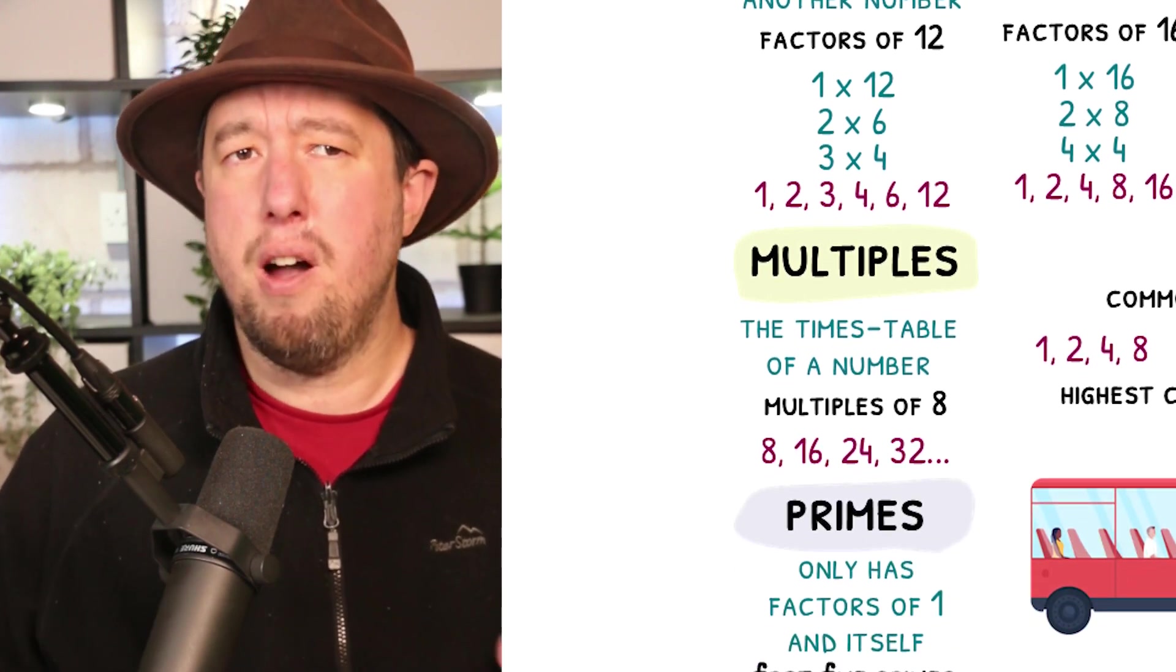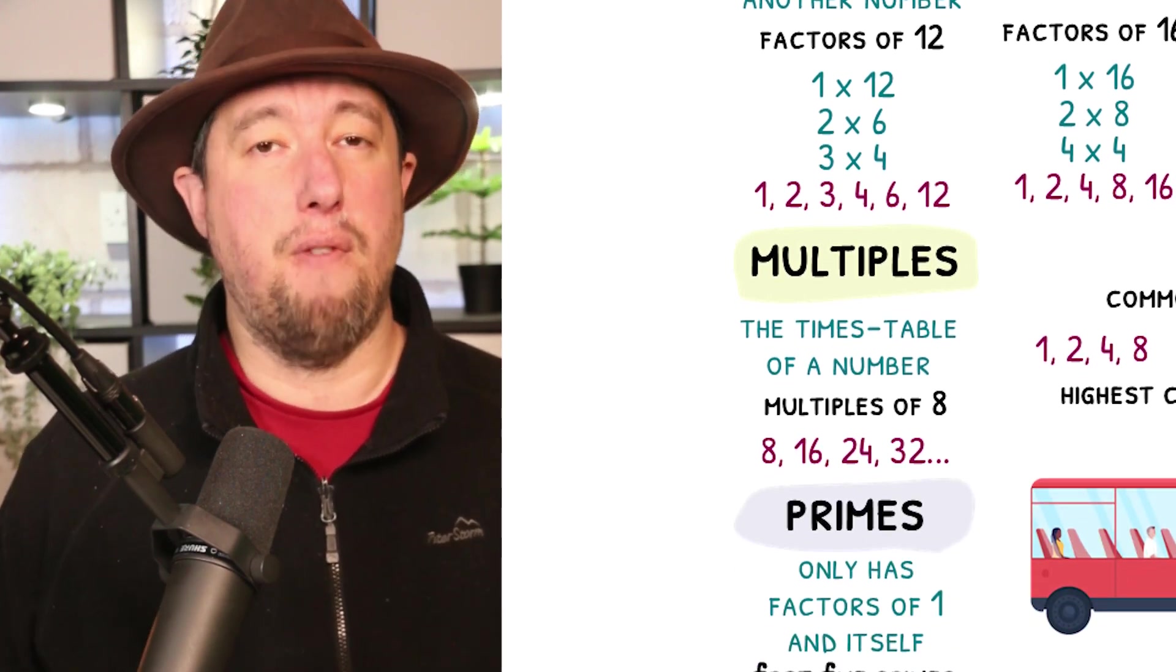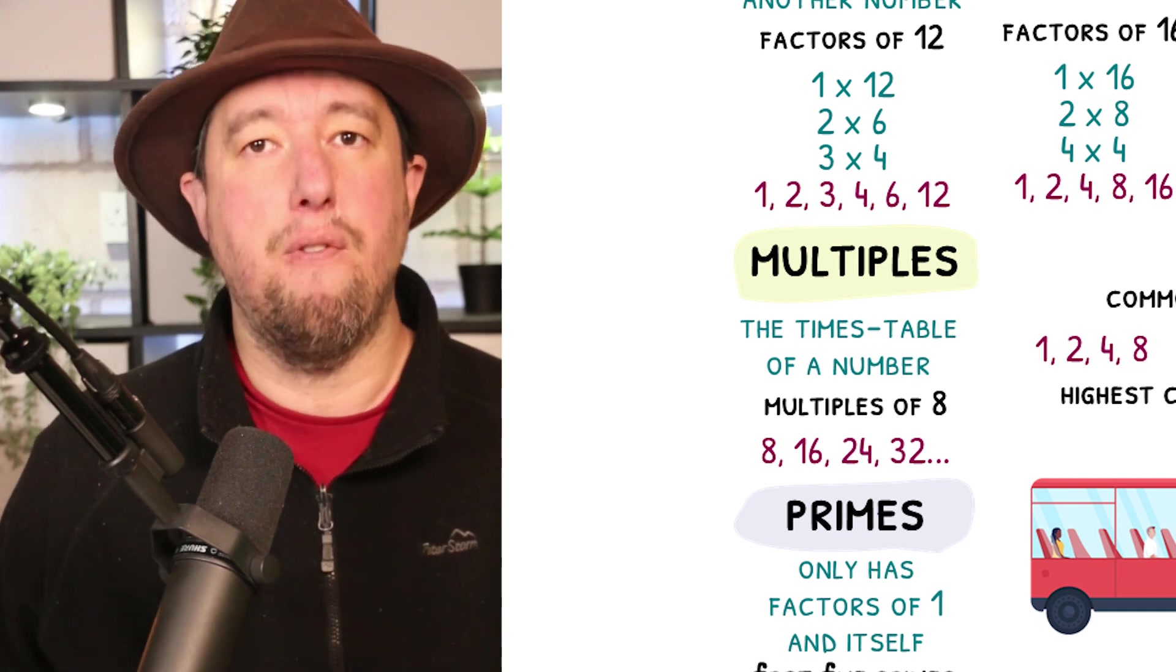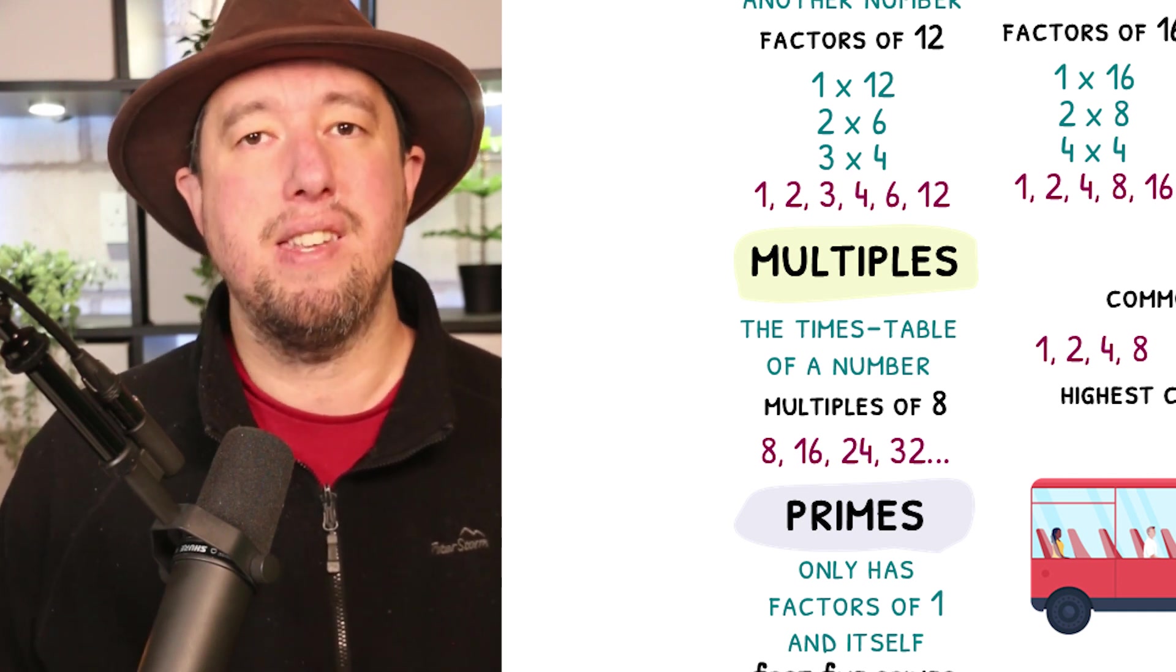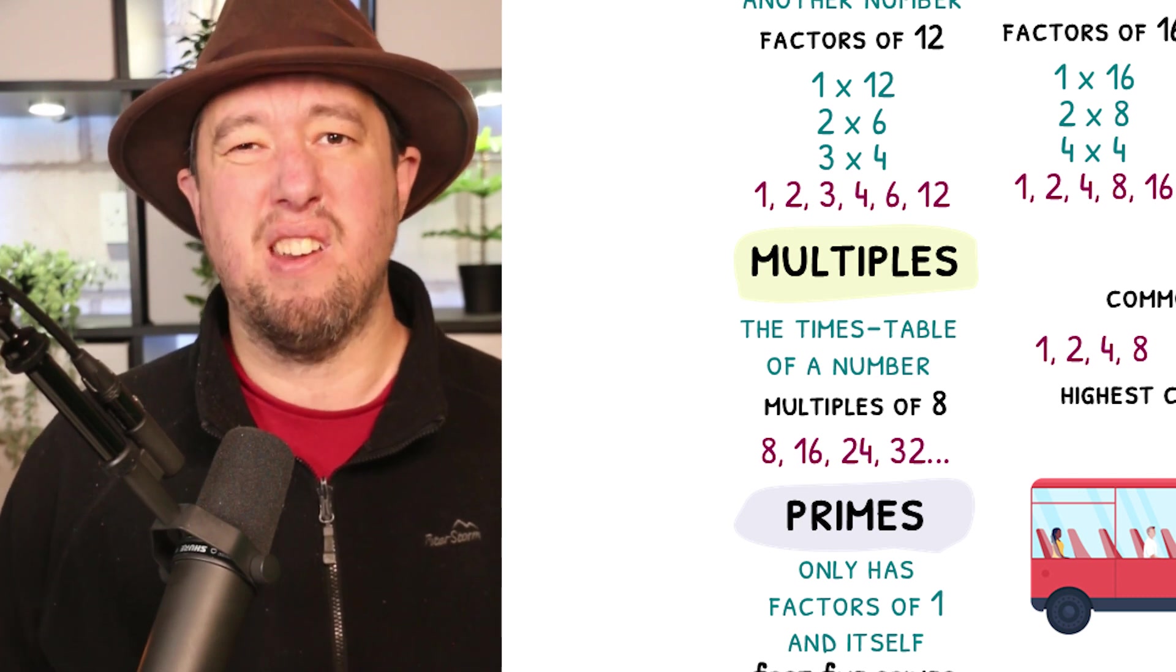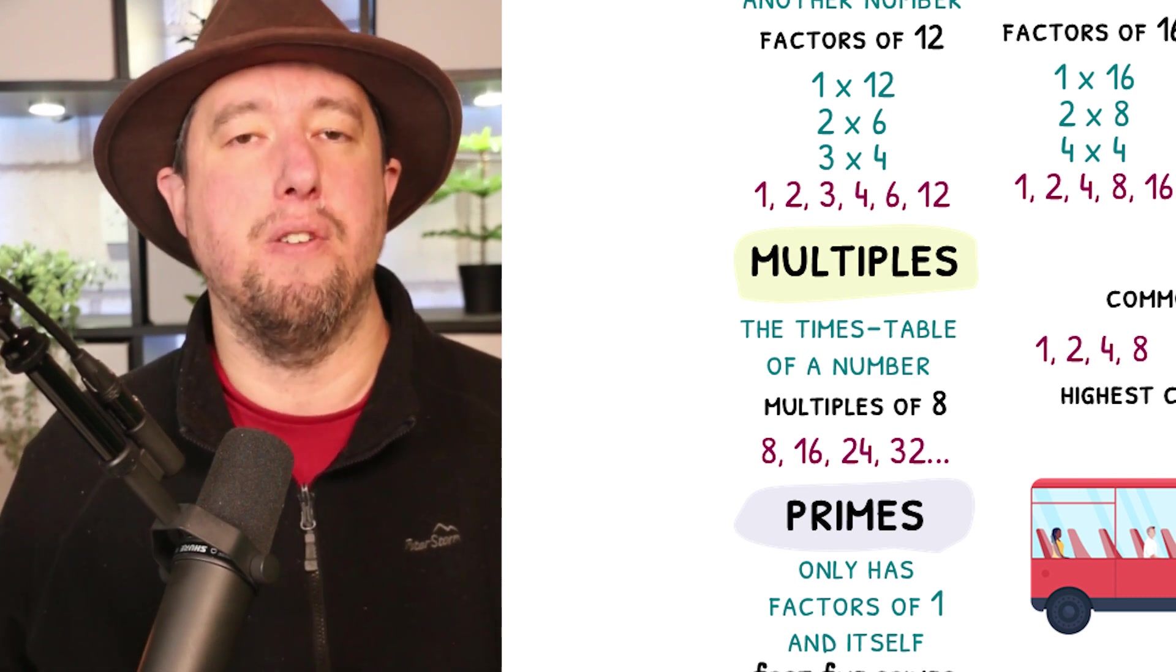Multiples describe the times table of a number, so the first 4 multiples of 8 are 8, 16, 24 and 32. Unlike factors, every number has an infinite amount of multiples because you can always add the number on to find more.